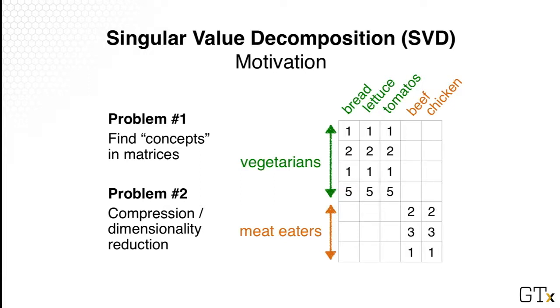And the second problem that LSI or SVD can solve is through finding these concepts, we can rank the concepts and potentially throw away the less important ones so that we can store our data more efficiently. And there's a strong relationship between dimensionality reduction or throwing away information to compression and also recommendation.